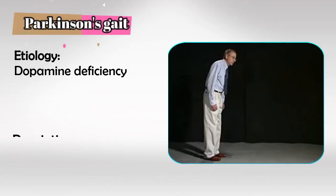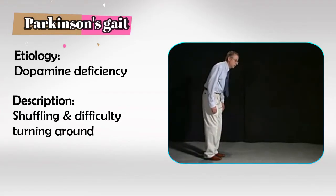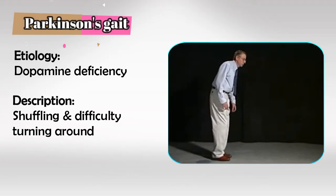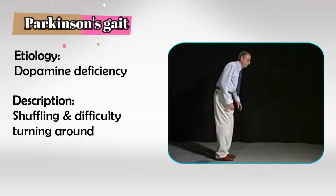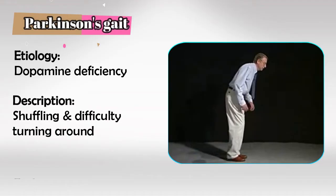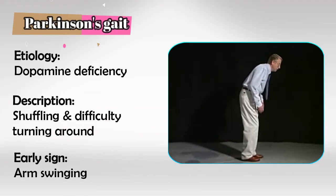Parkinson's gait is the most common and it's caused by dopamine deficiency. It presents as shuffling gait with difficulty in turning around. Some might even call it magnetic gait because your feet never really lift off. An early sign of the disease is arm swinging while walking.